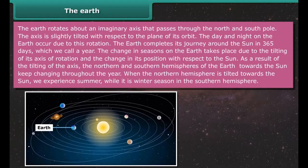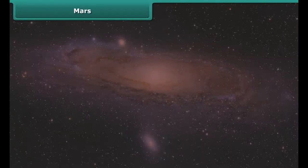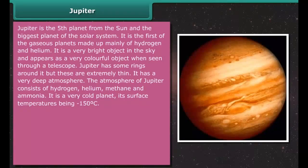Mercury is the planet nearest to the Sun. It is smaller than Earth and nearly the same size as the Moon. It is occasionally visible just before sunrise or after sunset due to its brightness, and is often called the morning or evening star. Like the Moon, Mercury has a rocky surface and mountains.